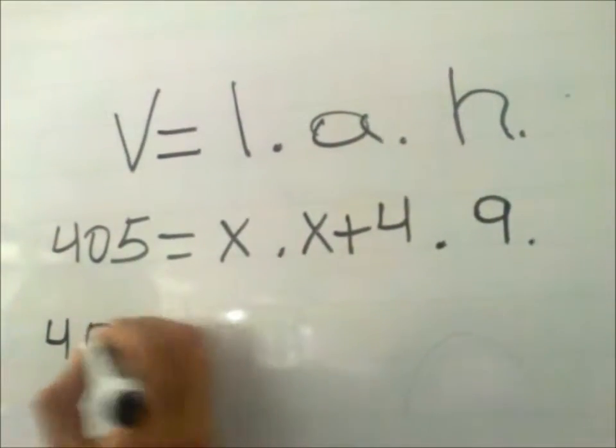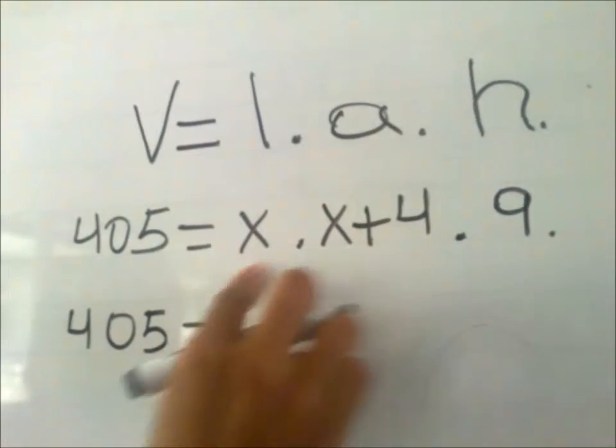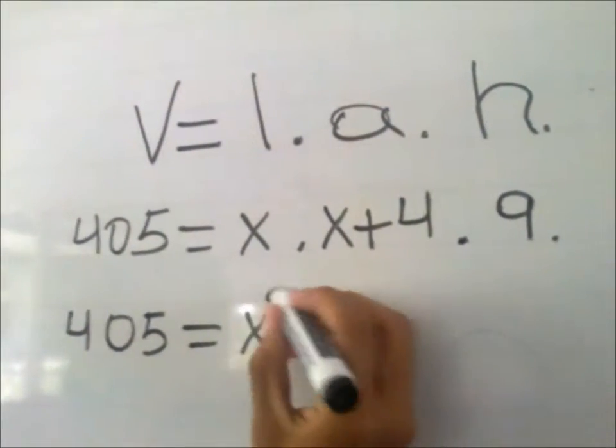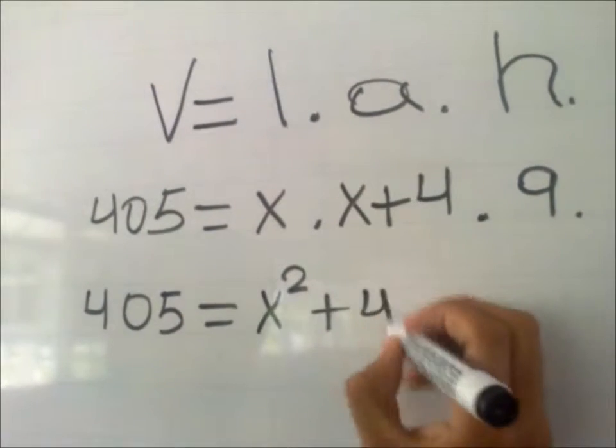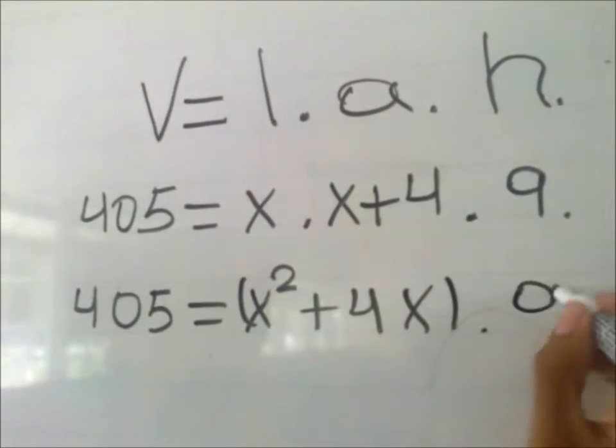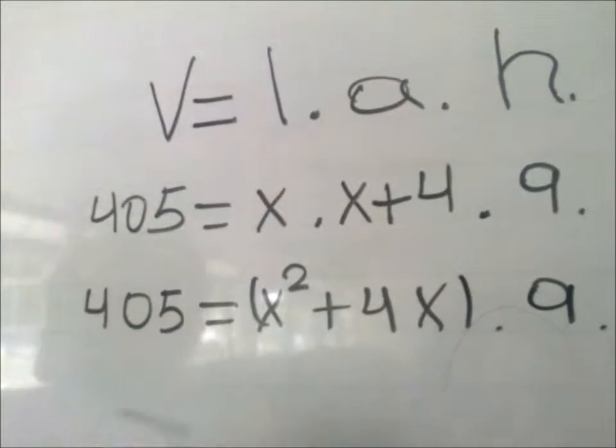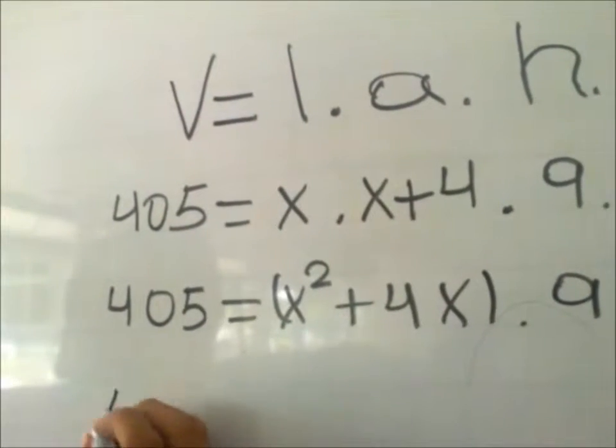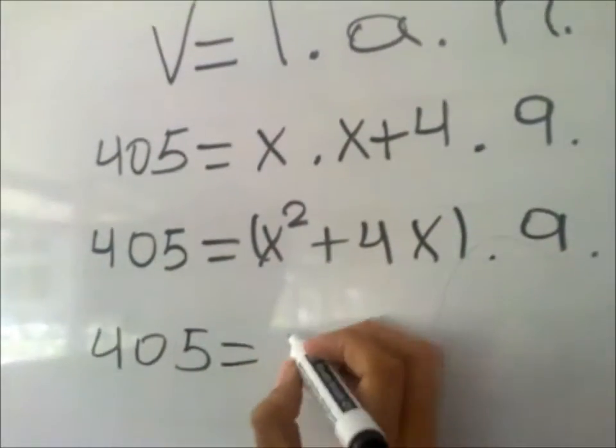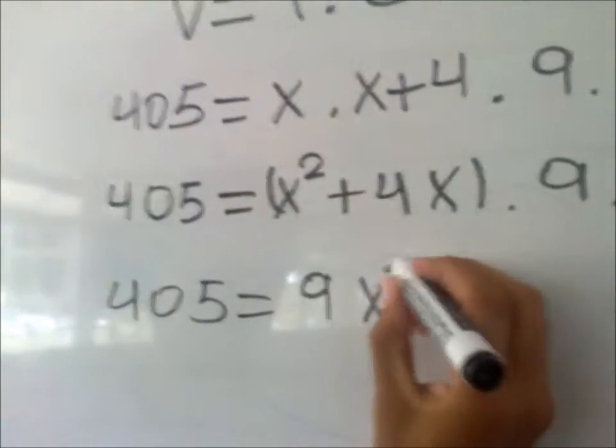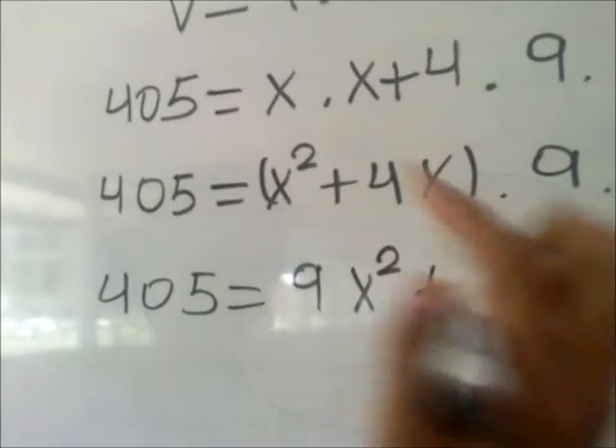Once we have these values, we proceed with the multiplication. x by x gives x², and x plus 4 gives us 4x. This is multiplied by 9. We continue to multiply: 405 is equal to 9x² plus 36x.